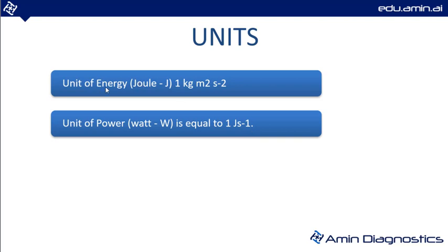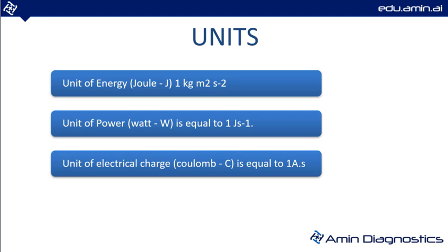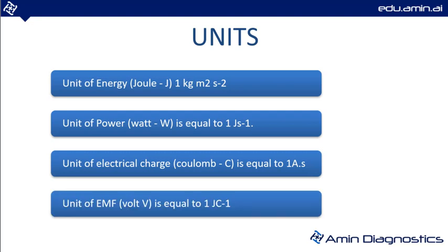To recap: energy is measured in joules and power in watts. Electric charge is measured in coulombs, and one coulomb is equal to one ampere-second. The EMF — electromagnetic force — or potential difference is measured in volts, which is equal to one joule per coulomb.